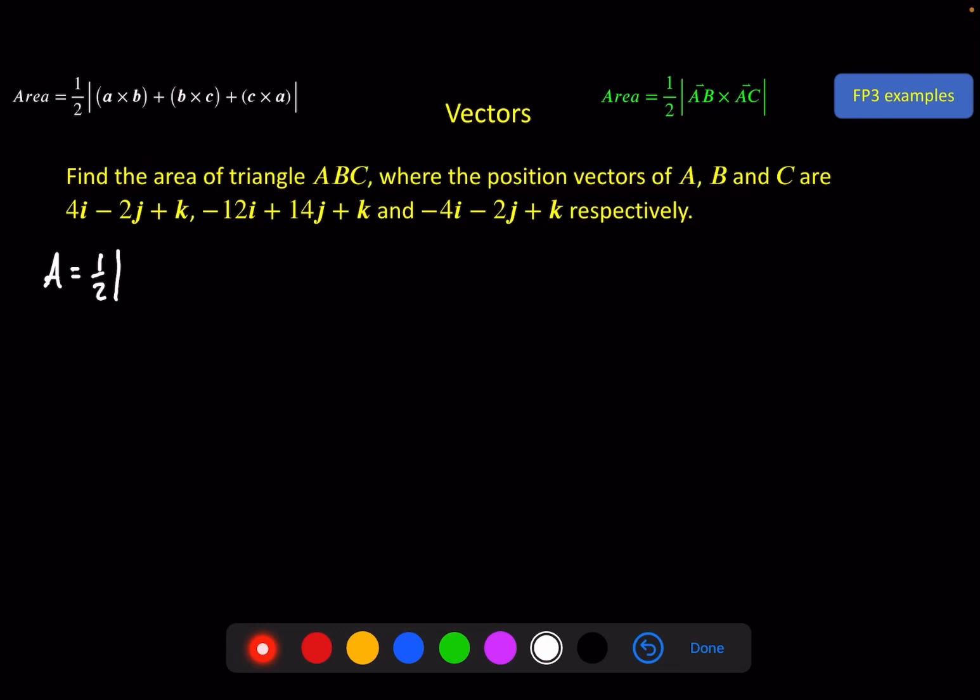I'll do the white one in white. And because there's a lot of cross products in here, I'm going to do these separately. So 4, -2, 1 cross -12, 14, 1. And that is -2, -14, -16. And we've got -12 minus 4 is -16 as well. And then we've got 56 minus 24, which is 32. So that's this one.